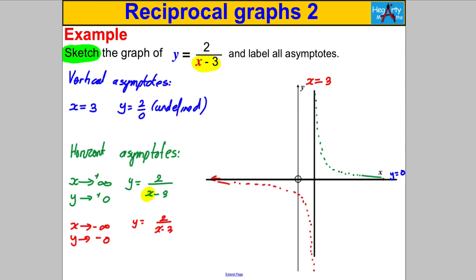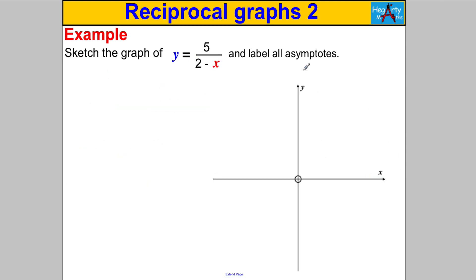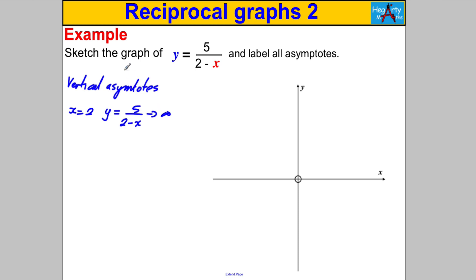There is a decent sketch of y = 2 / (x − 3) with both asymptotes labeled — we're done. Let's try another one. For the next example, we find the vertical asymptote first. When x = 2, y = 5 / (2 − x) blows up and tends towards infinity, so the vertical asymptote is x = 2. Let's draw and label that.